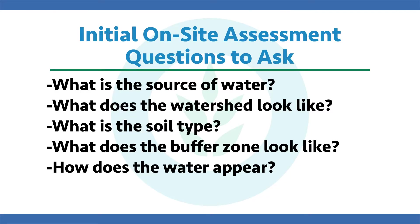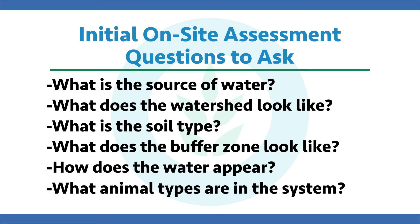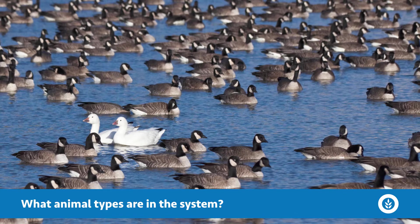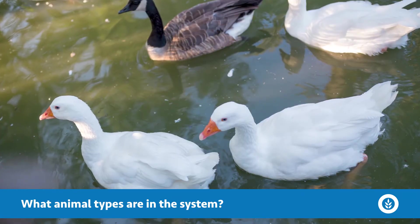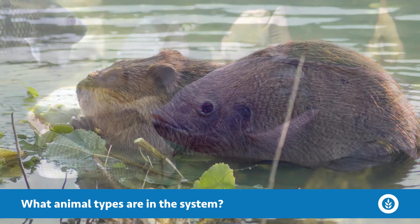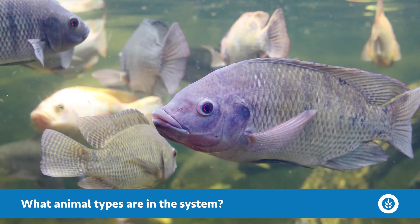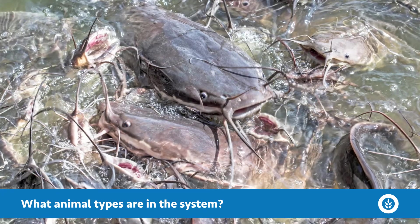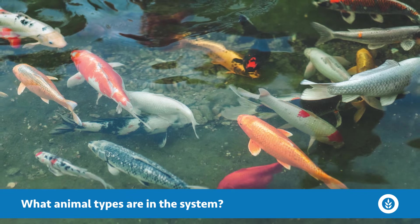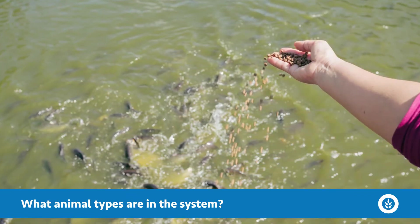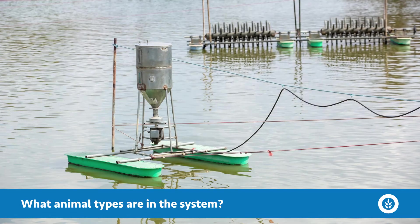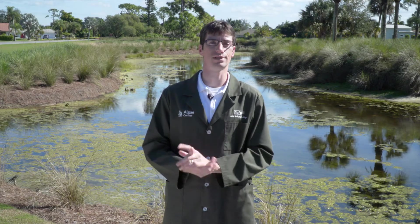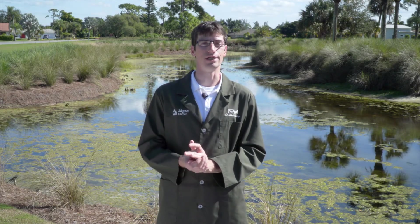We also look at wildlife in the on-site assessment. What types of animals are in the system? Do you see a lot of geese, ducks, or swans flying in, bringing nutrients with their feces? Do you have muskrats or beavers? Even with fish — do you have a diverse array of different types and sizes, or is it mainly one type? Do you have a lot of carp and catfish, or more trout and goldfish? Are those fish fed by hand, by a machine feeder, or are they left to fend for themselves? These are all important things to ask.